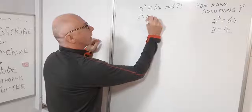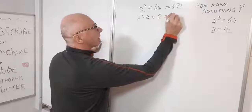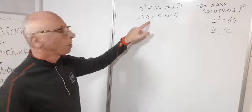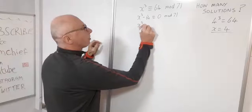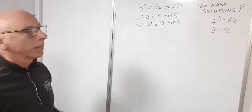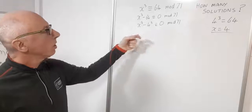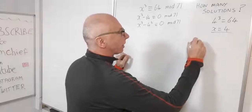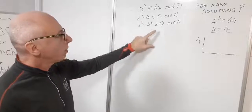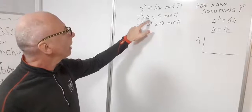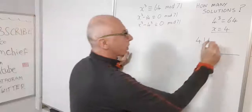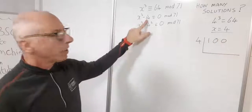So x cubed minus 64 is congruent with 0 mod 71. Since 64 is 4 cubed, we can use the difference of two cubes: x cubed minus 4 cubed is congruent with 0 mod 71. If you don't know the formula for the difference of two cubes, you can use synthetic division. We put in our known solution 4, then take the coefficients of this cubic: x cubed has a coefficient of 1, x squared and x have zeros, and the constant at the end is negative 64.